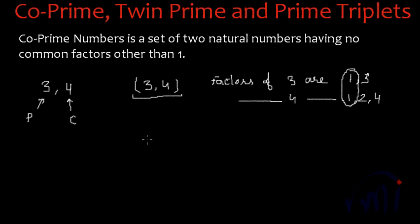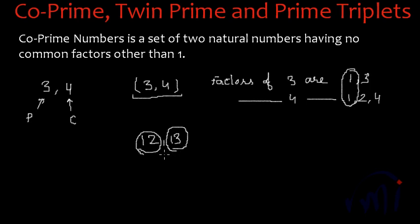You can also have numbers like 12 and 13. 12 is an even number but 13 is an odd number and at the same time it is a prime number. There are no common factors between 12 and 13, so 12 and 13 will also be called co-prime numbers.